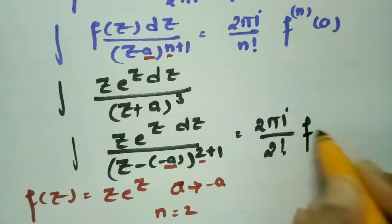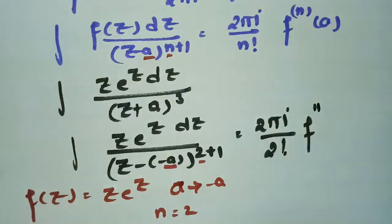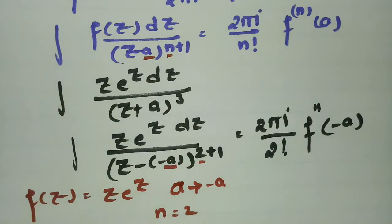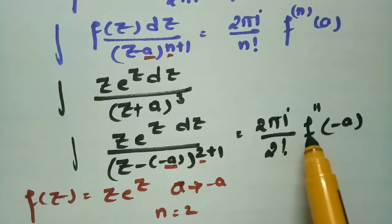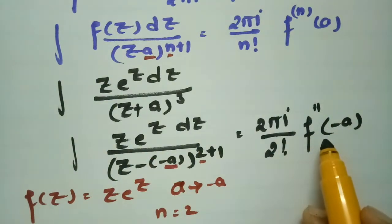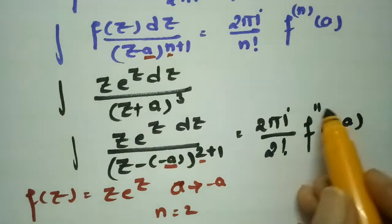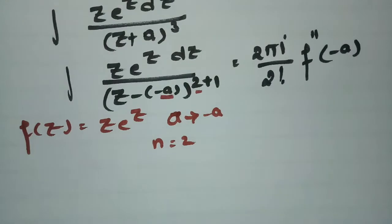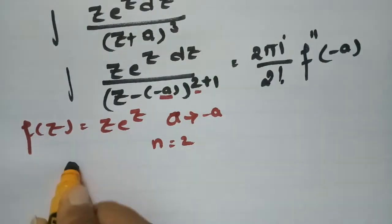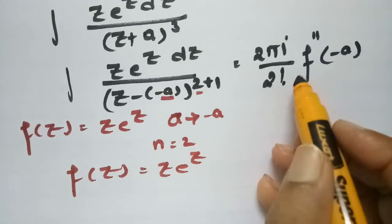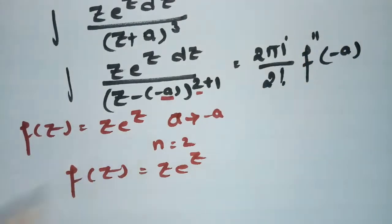With n = 2, we need the second derivative. n! = 2! = 2, and in place of a we have -a. The formula gives 2πi / 2! times f''(-a). Our f(z) = z·e^z, and we need to compute its double derivative.